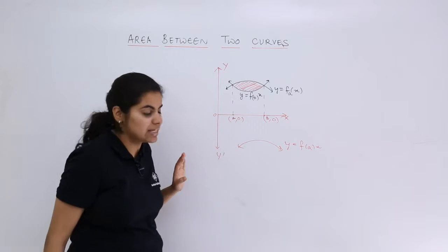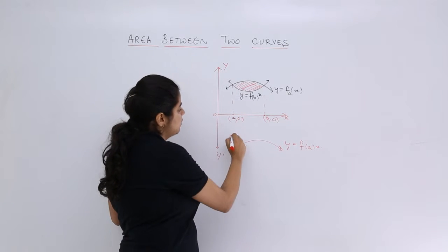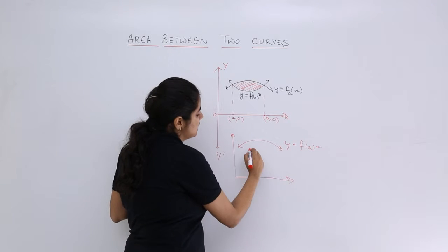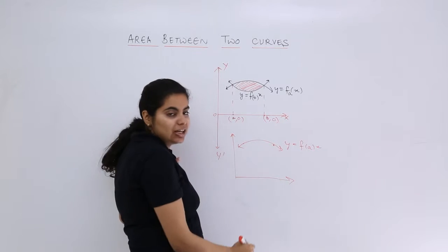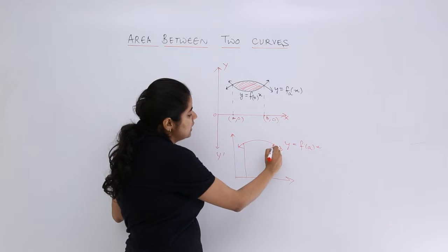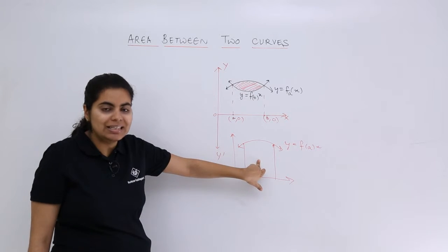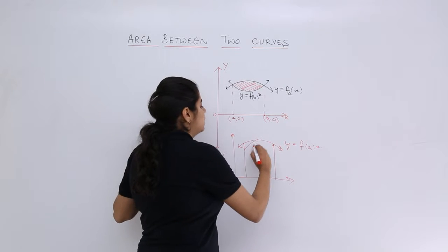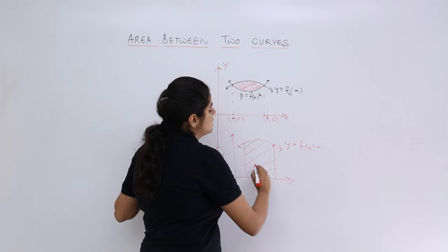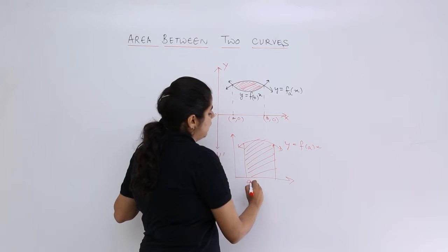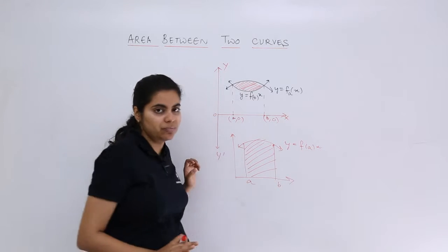This is y equals f of ax. If I see this with regard to the coordinate axis, here would be point a, here would be point b. Now you know how to calculate this—it's area under a simple curve. This will give me the area if I integrate from a to b this equation.